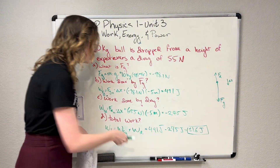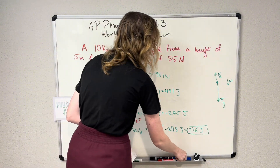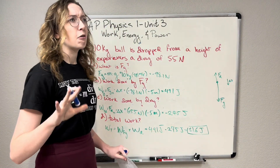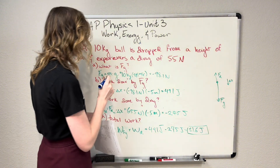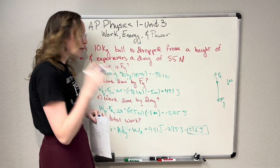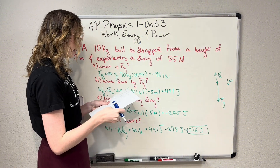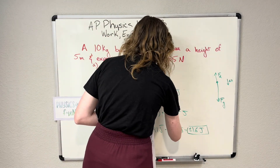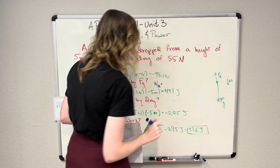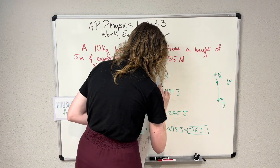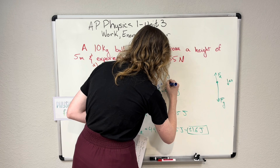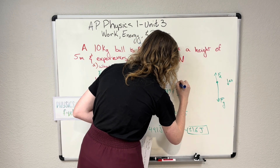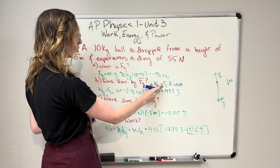Before we wrap up, I want to address one thing: what if we decided to use the equation given on your AP Physics 1 equation sheet — the equation that my fellow Beth and I dislike so much? I'll work this out in blue. For the force due to gravity, the work due to the force of gravity equals the force of gravity times d times cosine theta.